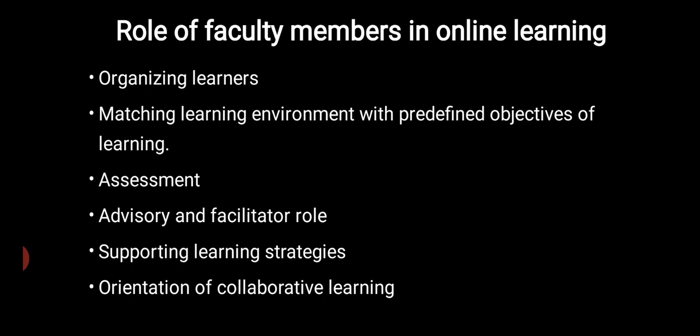The next role is supporting learning strategies — online learning strives to provide mass customization in which the learner can develop core competencies using learning strategies best suited for them. The last role is that it is a collaborative method — online learning can and should be a collaborative effort from both the teacher's side and the learner's side.